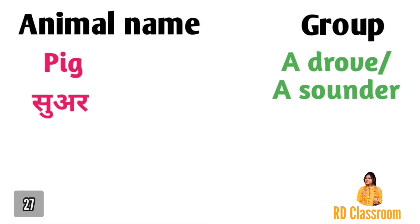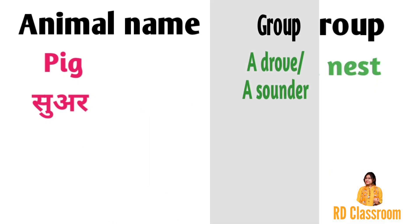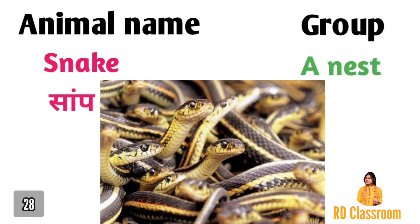Number twenty-seven is pig, ya fir suwar, jiske group ko kaha jata hai a drove ya fir a sounder. Number twenty-eight is snake, ya fir saamp, jiske group ko kaha jata hai a nest.